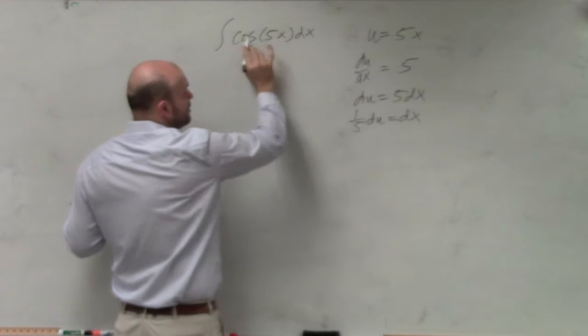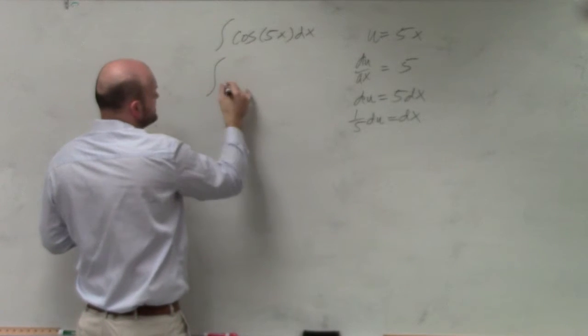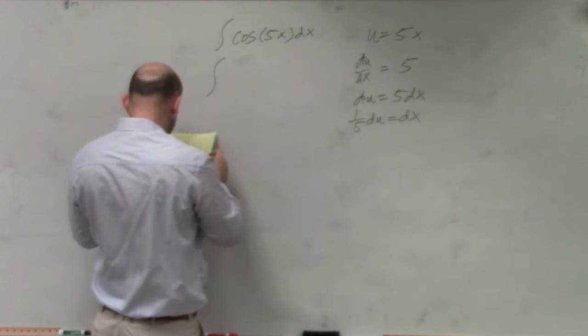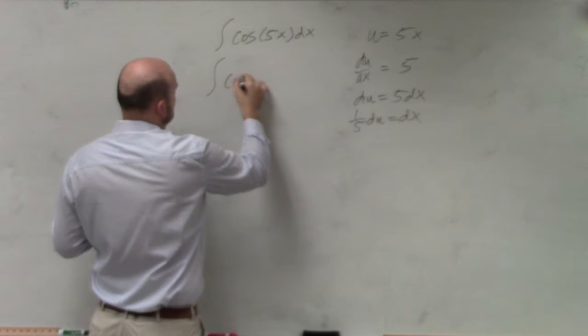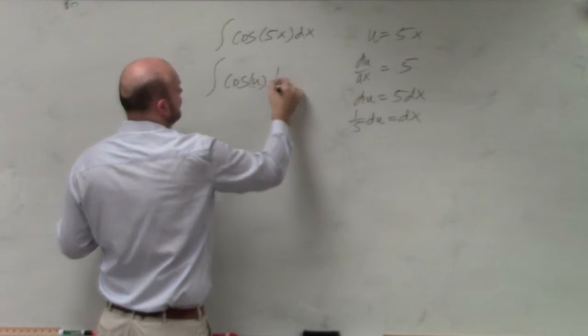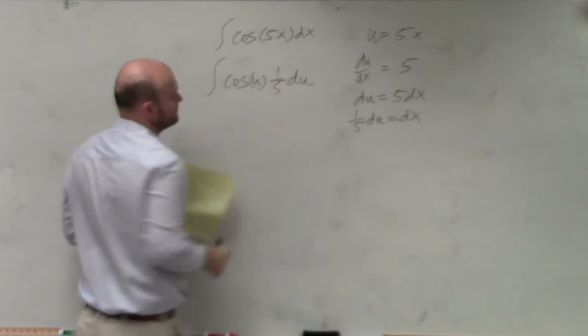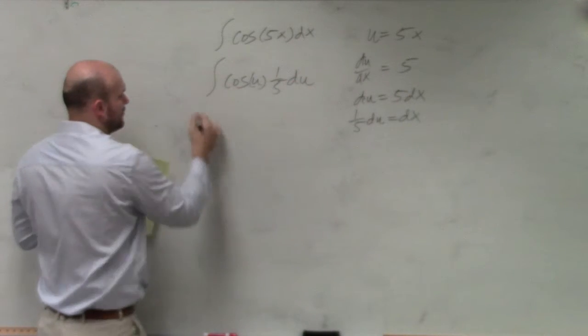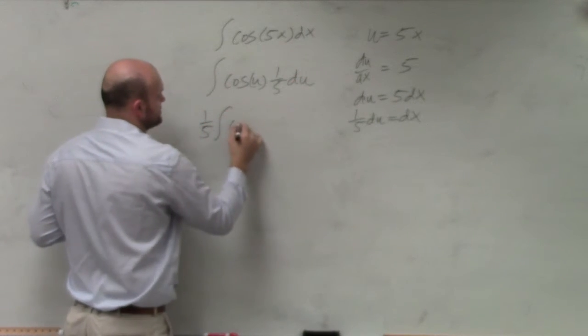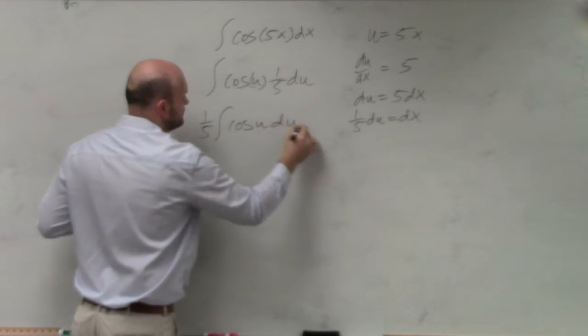So I can replace my dx with 1 fifth du. This is really cosine of u. So really what I'm doing is saying the cosine of u times 1 fifth du. And then I can throw that 1 fifth out and just say cosine of u du.